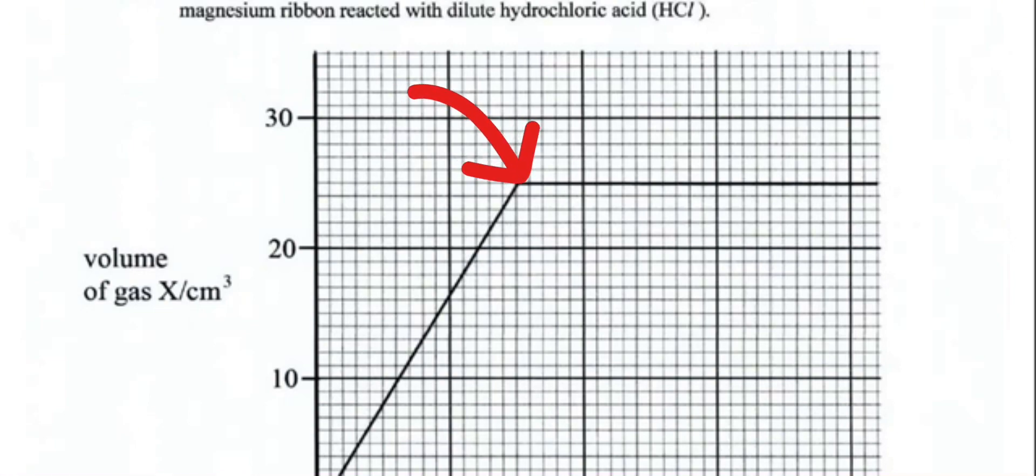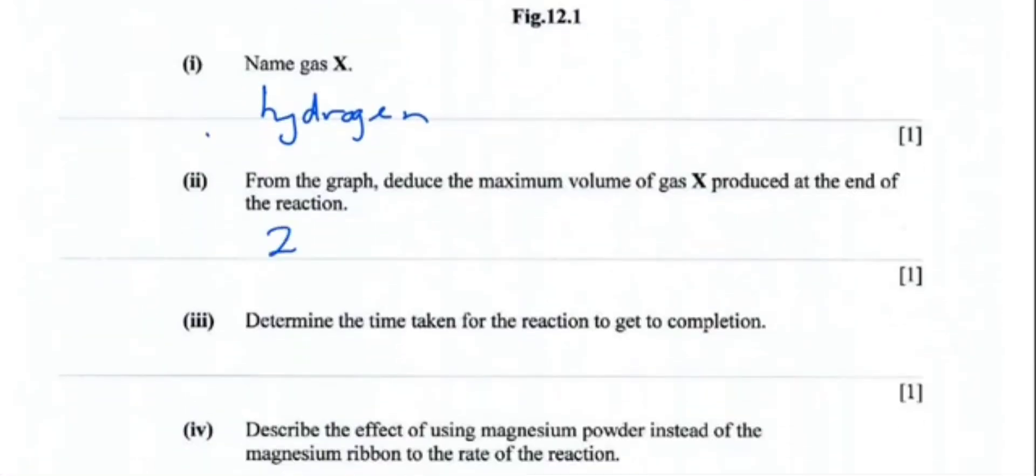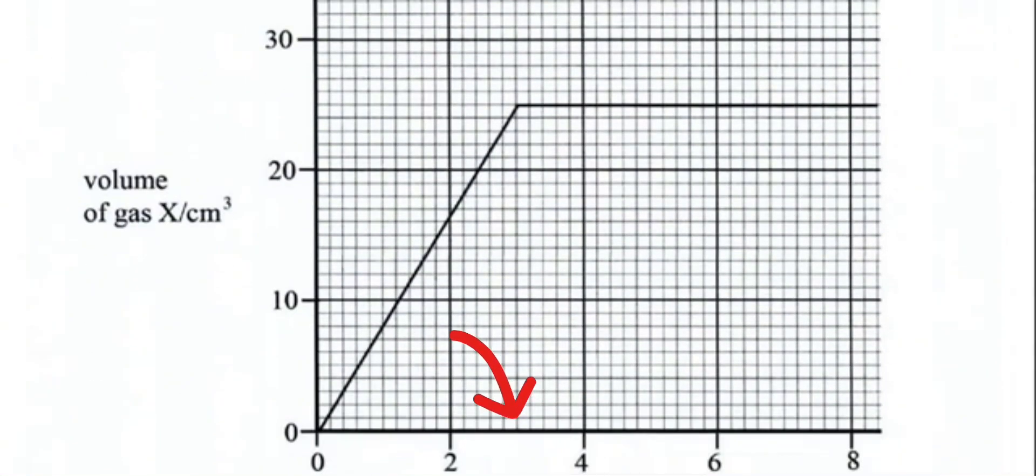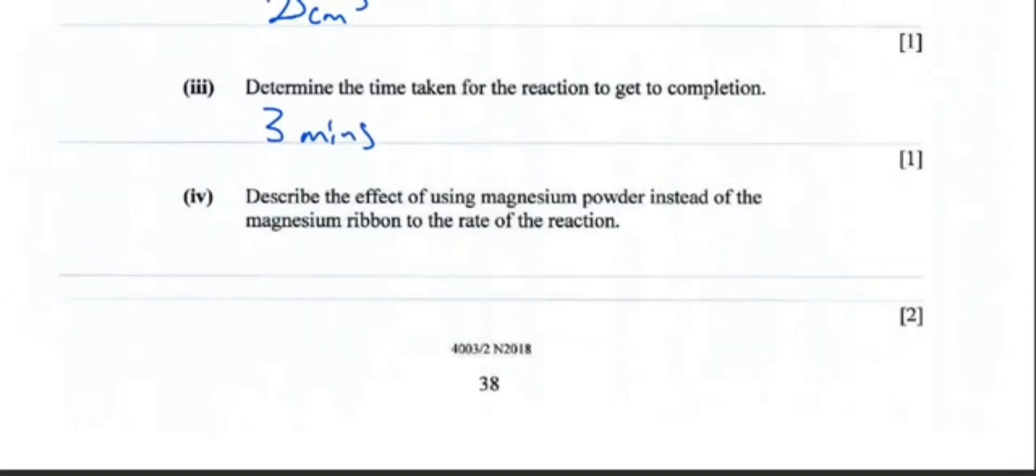Determine the time taken for the reaction to get to completion. Again, this is the time where the graph reaches completion. If you can notice here that each five units, these small boxes, represent one unit. So at the graph, where the graph levels off, it is three minutes. Describe the effect of using magnesium powder instead of the magnesium ribbon on the rate of reaction. When we reduce the size of the magnesium ribbon to magnesium powder, what it means is we've increased the surface area, and hence if we increase the surface area, it increases rate of reaction.